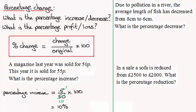Now in this next one we've got here, due to pollution in the river, the average length of a fish has decreased from 8 centimeters to 6 centimeters. What is the percentage decrease?